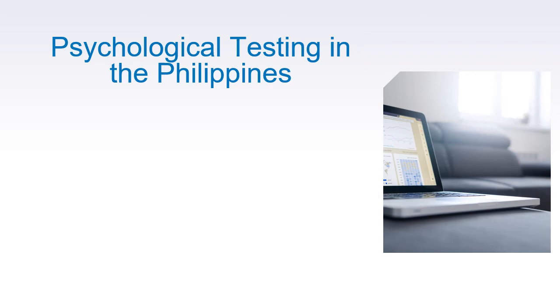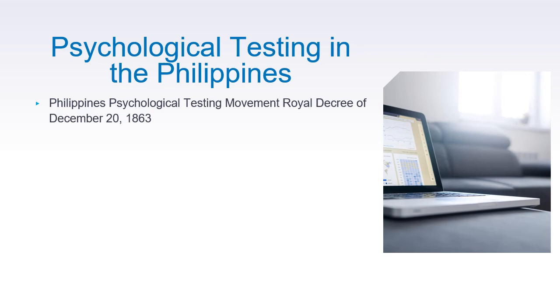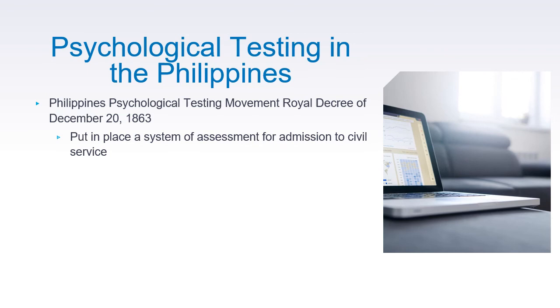America is not the only country that experienced the psychological testing movement. There is also such a movement here in the Philippines, beginning with the Royal Decree of December 20, 1863, where the Philippine psychological testing movement began. It was put in place for a system of assessment for those who would like to be admitted to social or civil service.